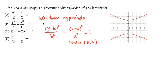Whenever the hyperbola goes up and down, we will have the y part go first: y minus k squared over b squared, minus x minus h squared over a squared, and this equals 1. The center is h comma k. Whenever we have up and down hyperbolas, the y part goes first, because this is a subtraction, so the order does matter.